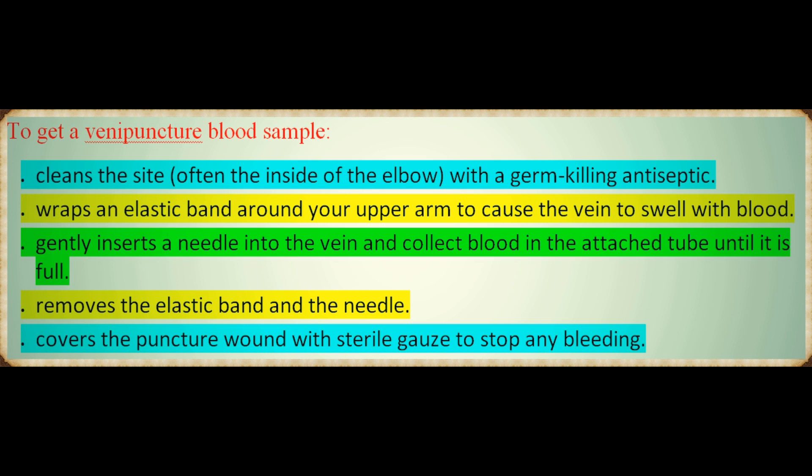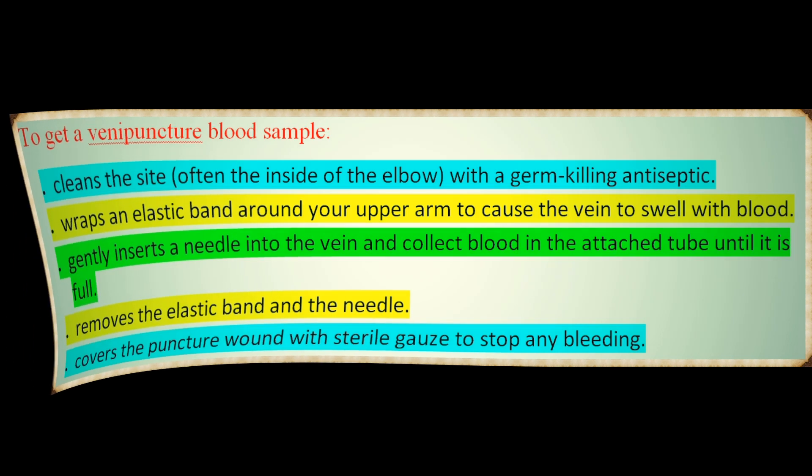To get a venipuncture blood sample, a healthcare provider cleans the site — often the inside of the elbow — with a germ-killing antiseptic, wraps an elastic band around your upper arm to cause the vein to swell with blood, gently inserts a needle into the vein and collects blood in the attached tube until it is full, then removes the elastic band and needle, and covers the puncture wound with sterile gauze to stop any bleeding.